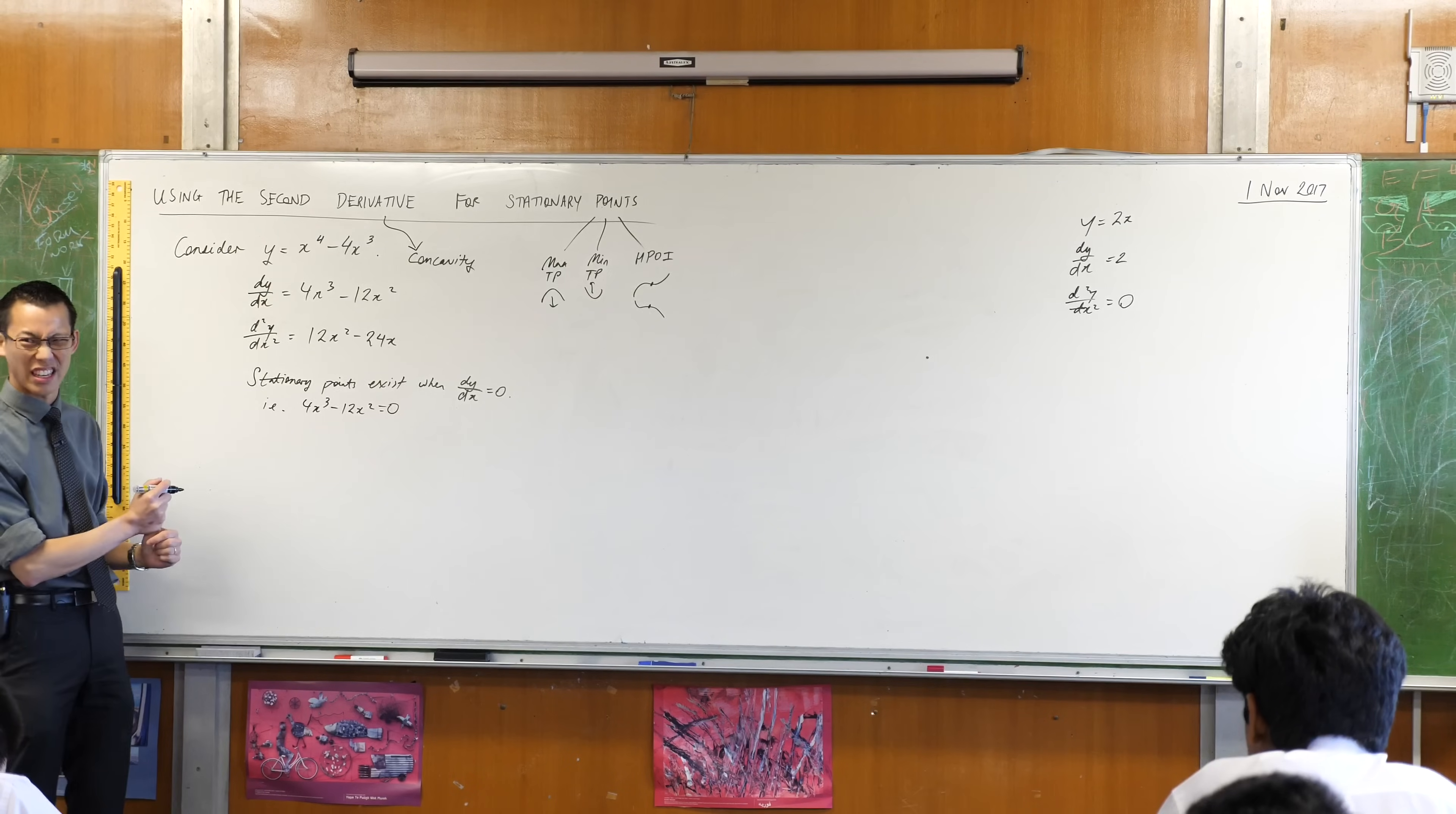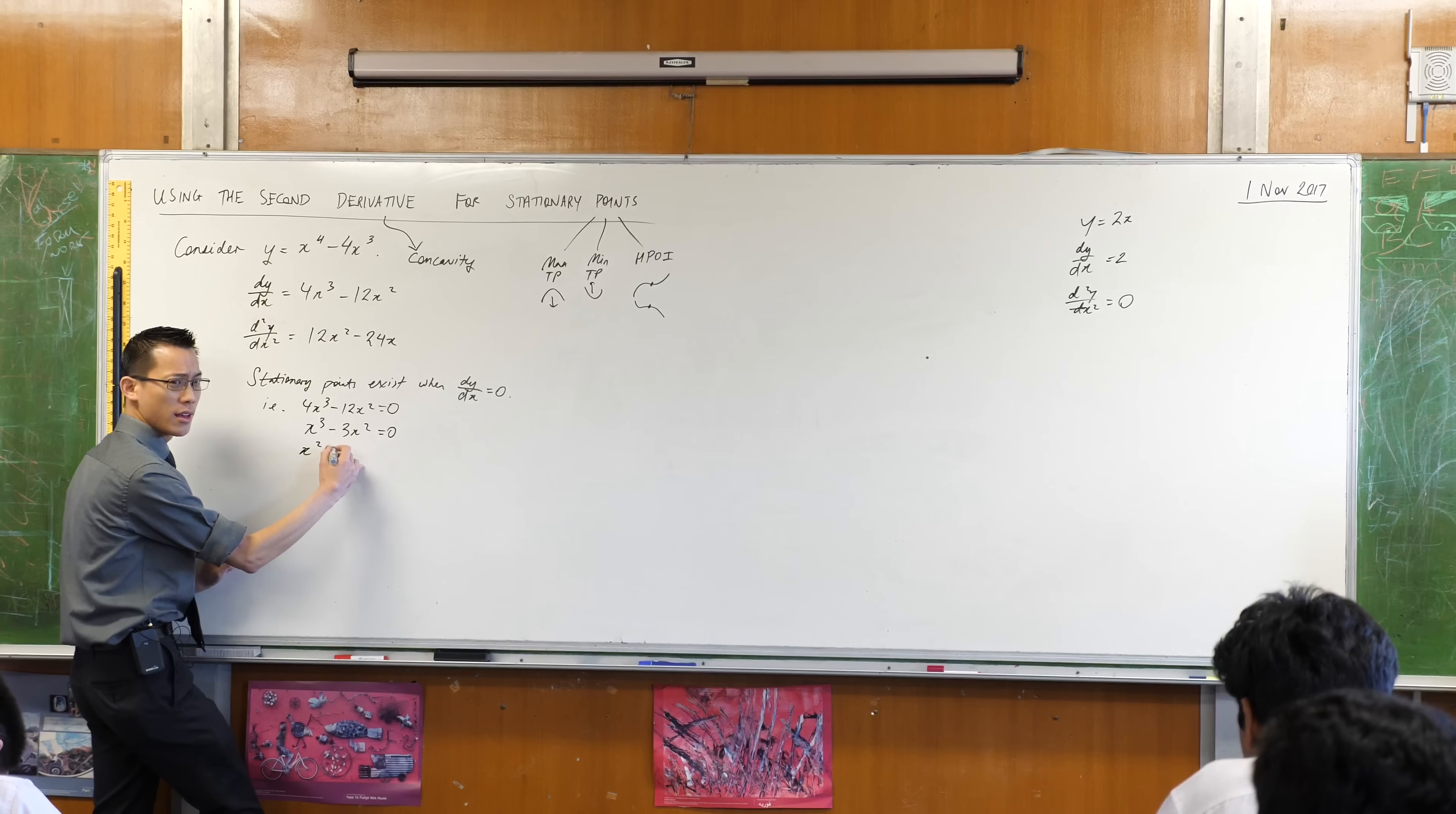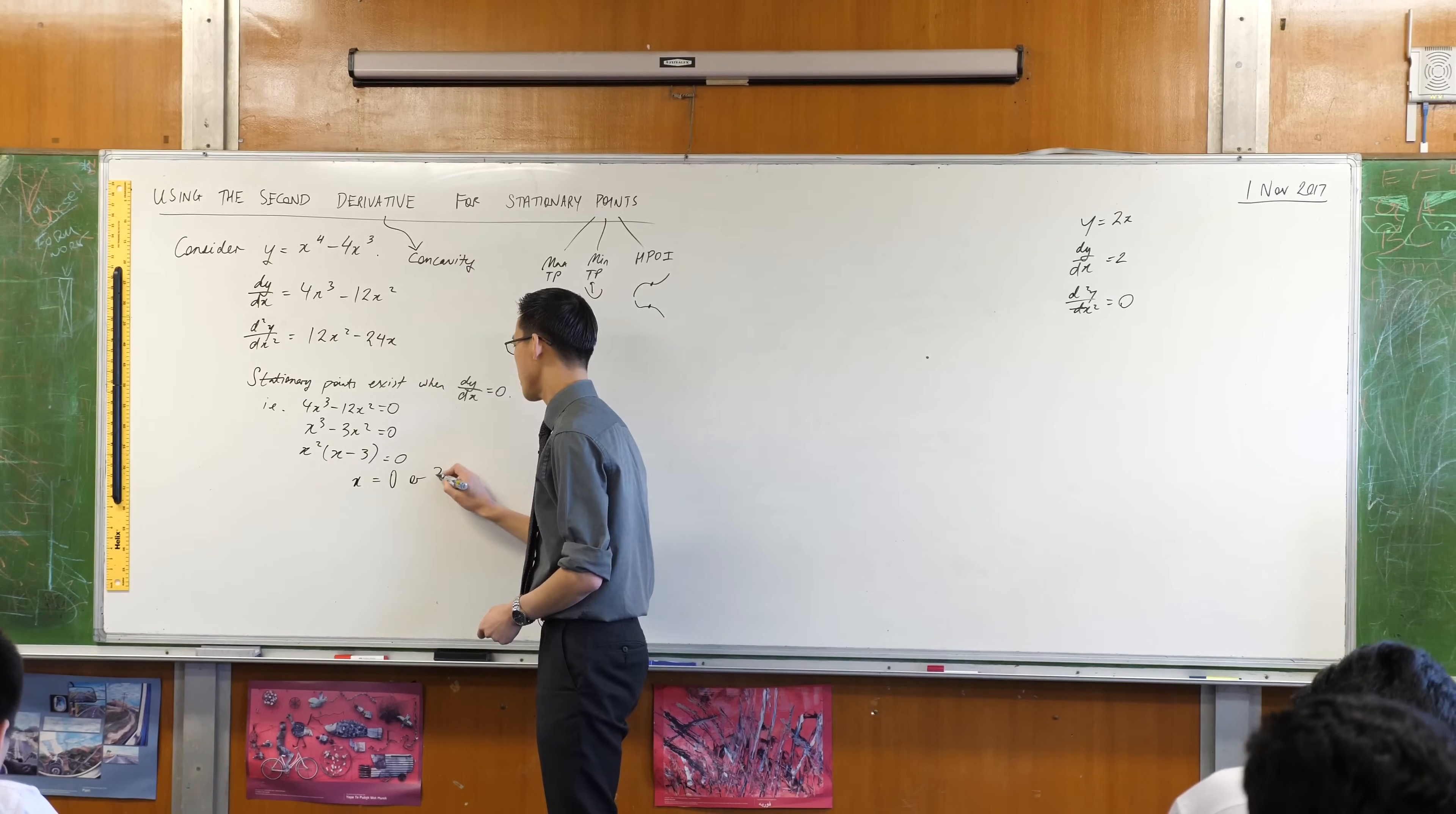Factorize. Before I factorize, there's something even easier I could do. Probably divide everything by 4. Now I'll factorize. So what would you like me to take out? I can take out x squared. That's how many x's are common. So that leaves me with x minus 3. It's early in the morning. I get it. So at this point, I factorized far enough. I found where my stationary points will be. x will be equal to zero or three. Fantastic.